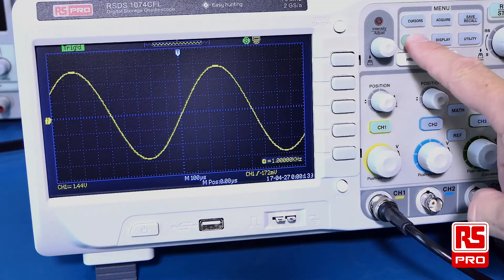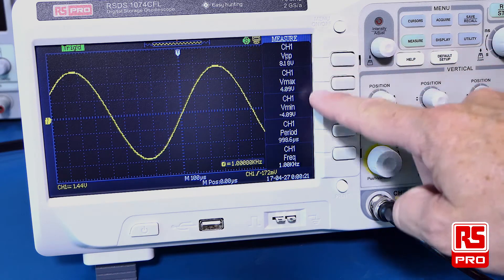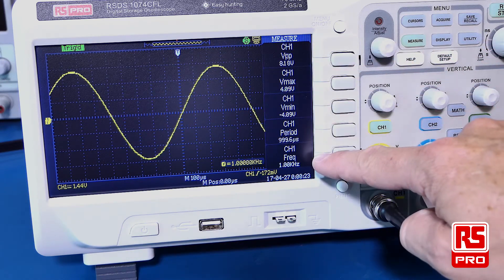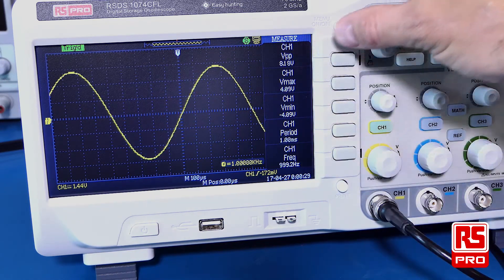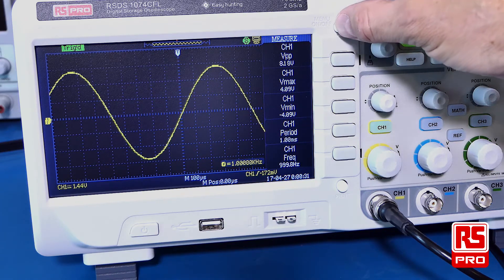The measure button will automatically bring up many of the measurement parameters of the waveform that you're looking at. Any menu system can be removed by switching the menu on-off button.